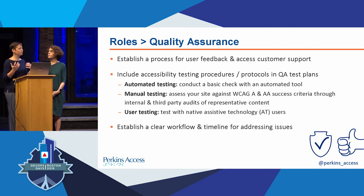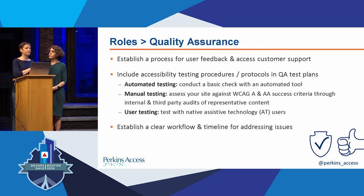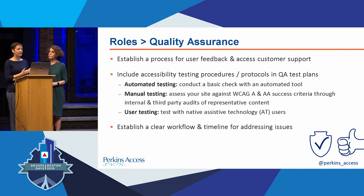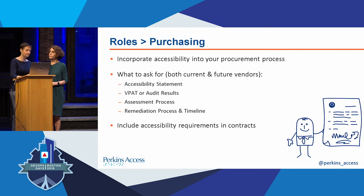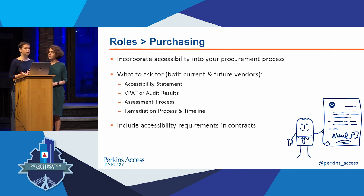For quality assurance: include accessibility in your testing procedures. It's great to use automated tools — just know they'll only surface 20%, at best 40%, of the issues on your site. Always incorporate users with disabilities into your user testing. Make sure there's a process for users to provide feedback about your site and access customer support when they hit a roadblock. And establish a clear workflow and timeline for remediating issues.